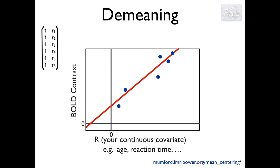First of all, we need to fit the model and the red line represents our model fit. We then calculate the beta values, one for each EV, and as you can see here also the graphical representations of those beta values, and then we set our contrast of interest. In this case we are interested in the group mean co-varying for age, so our contrast is one zero, which corresponds to beta one.